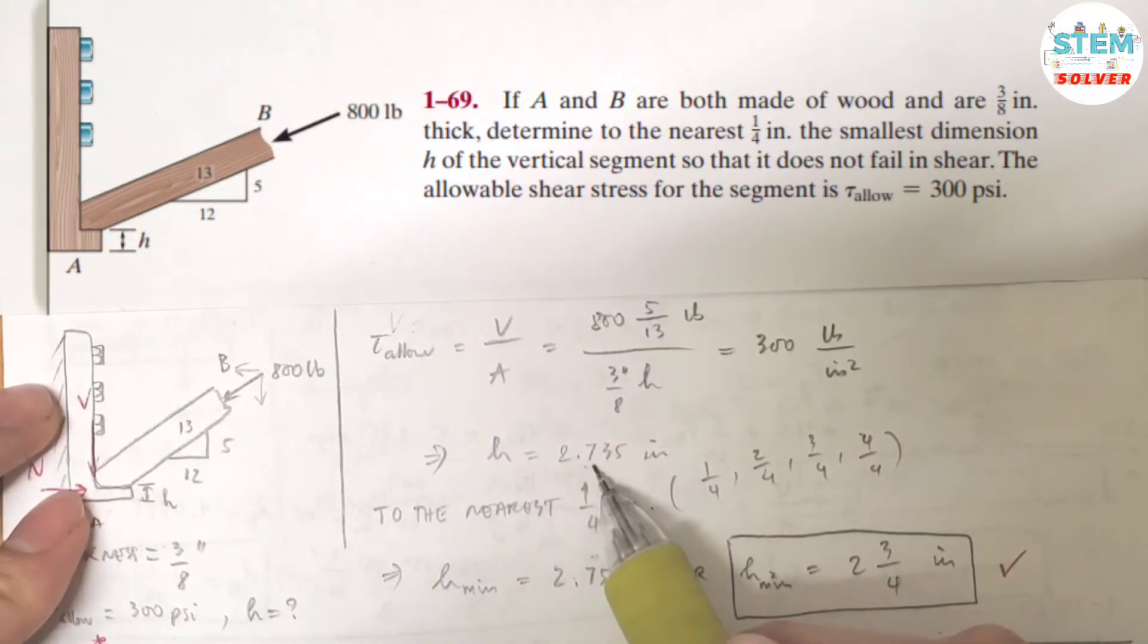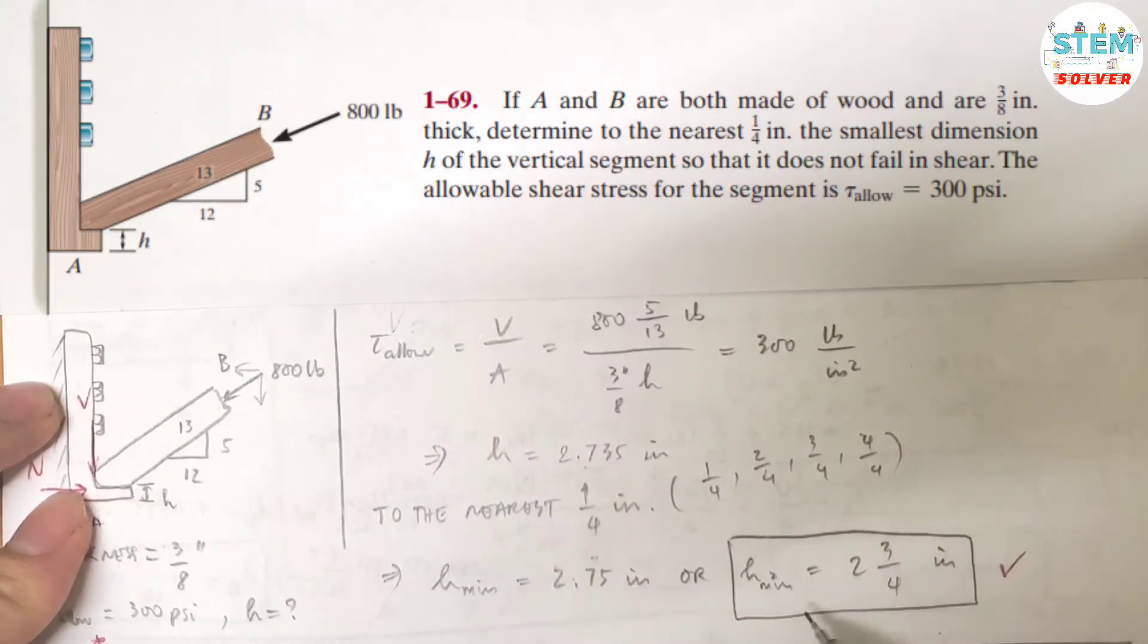And for the decimal, what is the nearest number of one-fourth that is greater than 0.735? That is three-fourths, right? Three-fourths is 0.75. And right here you have 0.735 or 0.74. So the minimum required H is equal to 2 and 3/4 inch, or 2.75 inch.